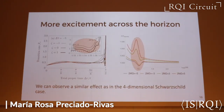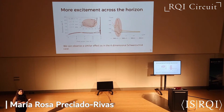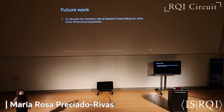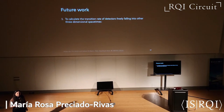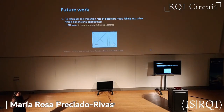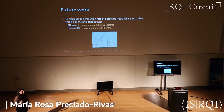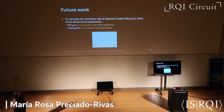Finally, we can see that our results for the BTZ black hole show similar behavior near the event horizon to what was observed for the four-dimensional Schwarzschild case. For future work, the first direction is to look into other three-dimensional spacetimes like the BTZ geometry, which is a work already in preparation with Max Spadafora. We also want to look at what happens for detectors freely falling into a rotating BTZ black hole, which is a work in preparation with another collaborator.